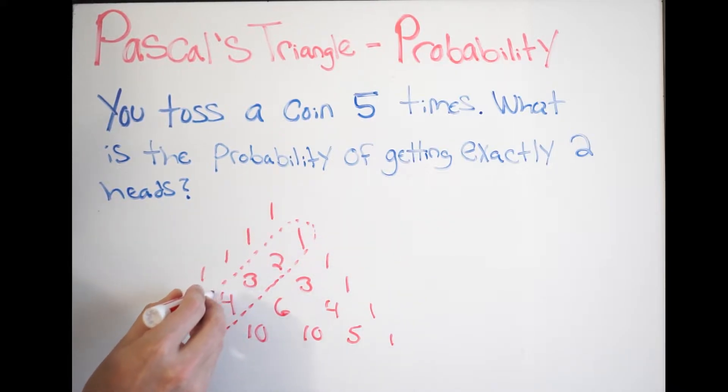This diagonal represents our exponent value. When we're dealing with probability or combinations, this represents our total. So, in this case, we're going to toss the coin a total of five times. That means I'm going to use the coefficients in this row.